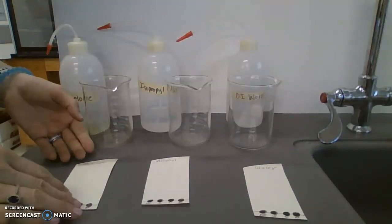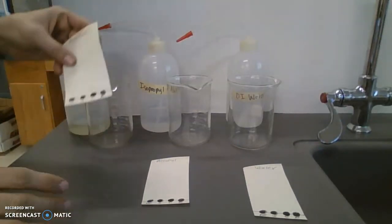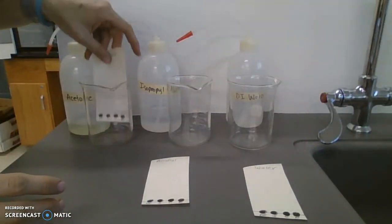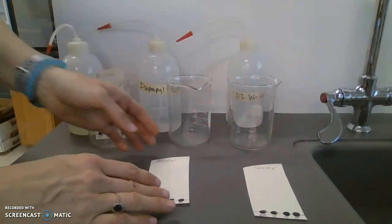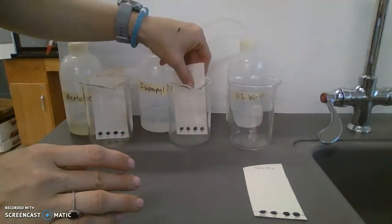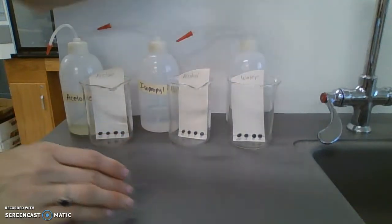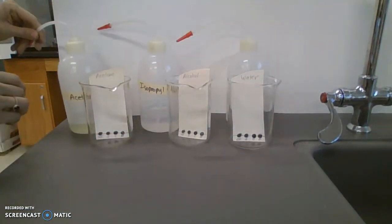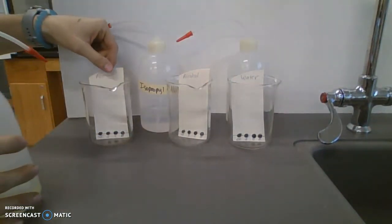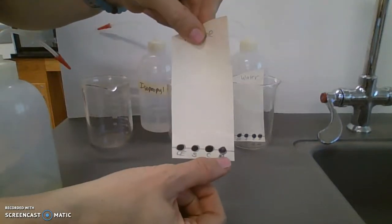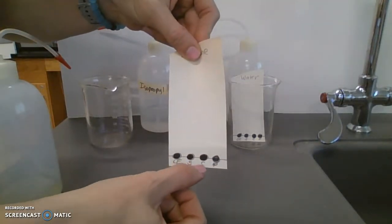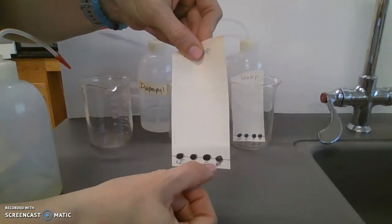Now for the fun part, we are going to take our filter paper and put the acetone in a beaker so it stands up, the alcohol in a beaker, and the water in a beaker just like so. I'm going to add enough liquid so that it comes right below this line right here.